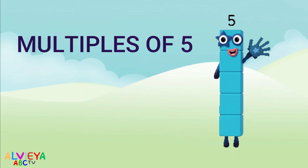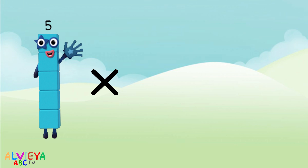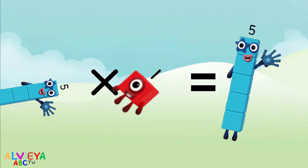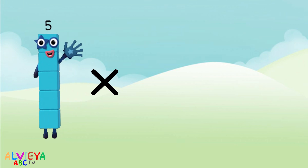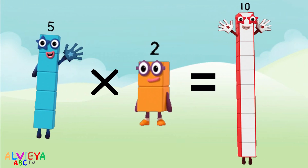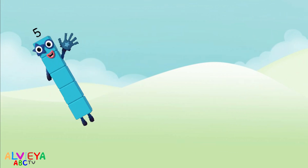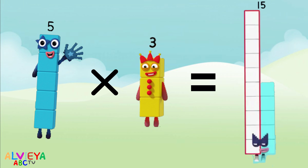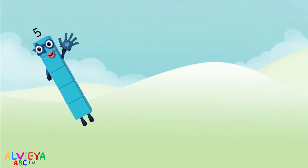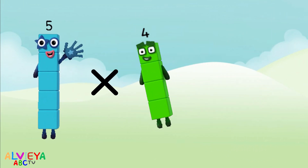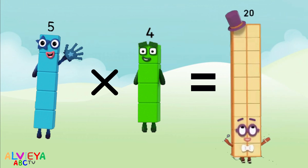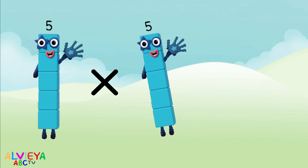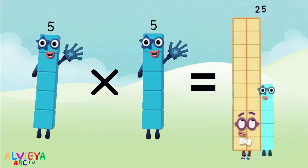Five times one equals five. Five times two equals ten. Five times three equals fifteen. Five times four equals twenty. Five times five equals twenty-five.